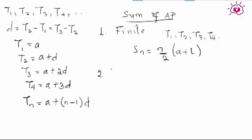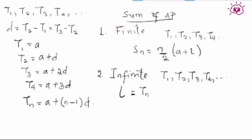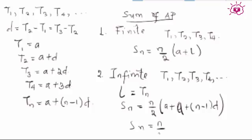For an infinite sequence — one without a last term — note that the last term L can also be referred to as the Nth term, which is A + (N − 1)D. Substituting this into the sum formula Sₙ = N/2 × (A + L), the last term L becomes A + (N − 1)D, giving us the sum formula for an infinite AP: Sₙ = N/2 × [2A + (N − 1)D].